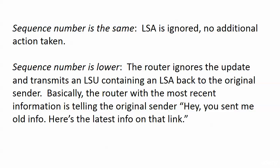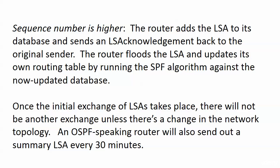That's pretty rare though — it's usually a higher or lower situation. If the sequence number on the incoming LSA is lower, the router ignores the update and transmits an LSU containing an LSA back to the original sender. Basically, the router with the most recent information is telling the original sender: you sent me old information, here's the actual latest info on that link.